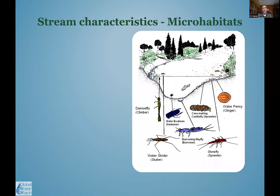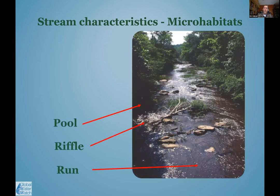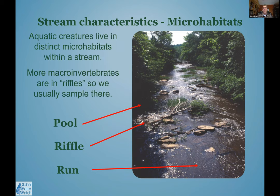We also look at different places in the stream where they live. Some live on the surface, some are embedded in the bottom, some cling to rocks or plants — these are called microhabitats. We also look at sections of the stream: a pool is where water barely moves, a riffle is where it moves rapidly over rocks, and a run is a longer straighter stretch. We typically sample riffles because that's where we find the highest abundance of macroinvertebrates.